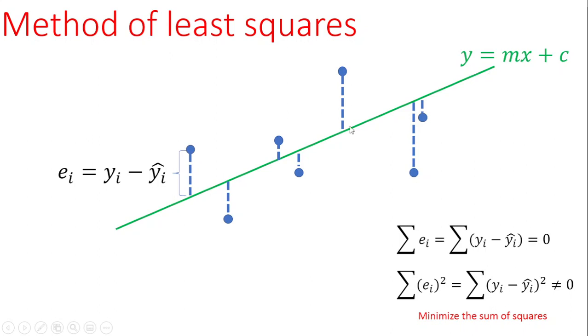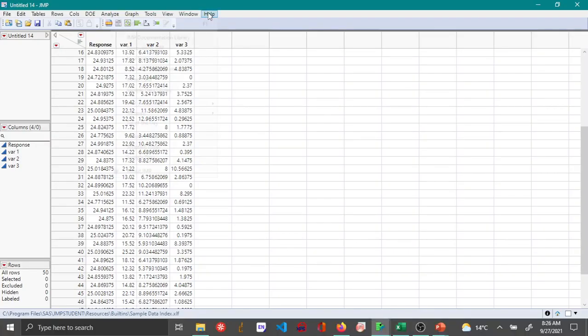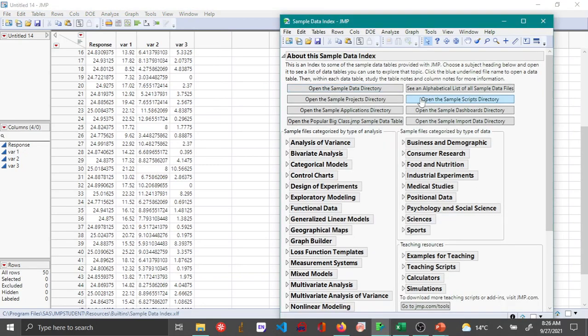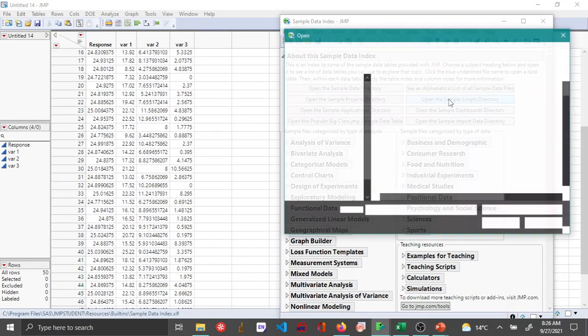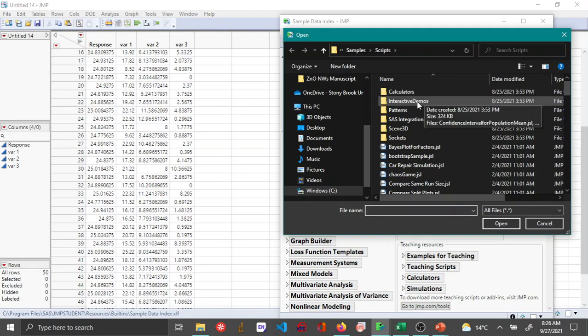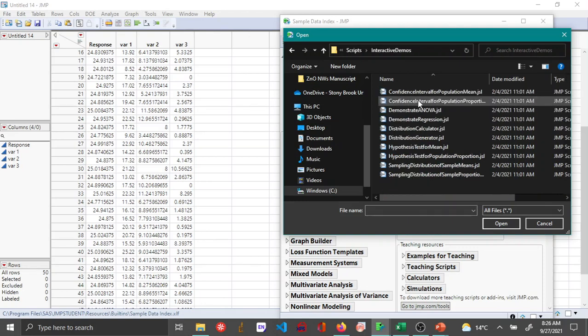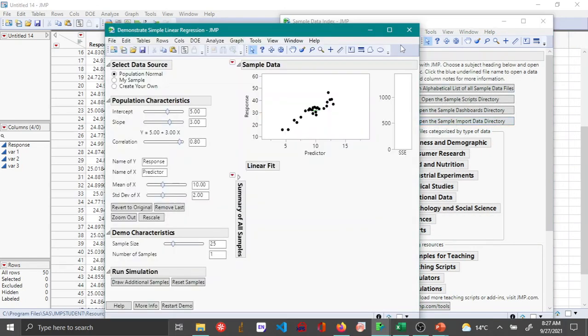Let's see how in the software. In JMP there is a regression demonstrator using which we can actually see how this process works. You can go to the Help menu and then click Sample Data. Here you can go to Open Sample Scripts Directory, and here you can go to Interactive Demos and you can see Demonstrate Regression.